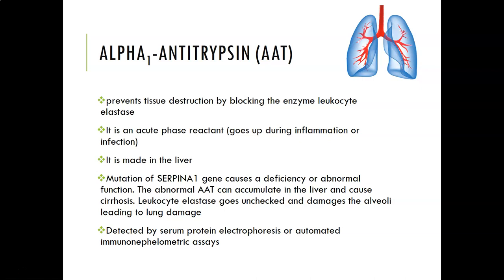Often people who have emphysema or COPD and have never smoked or been exposed to secondhand smoke — you can bet the cause is going to be a deficiency in alpha-1 antitrypsin. It is detected by serum protein electrophoresis or by automated immunonephelometric assays. On protein electrophoresis, the alpha-1 globulin band would be almost non-existent or very small.